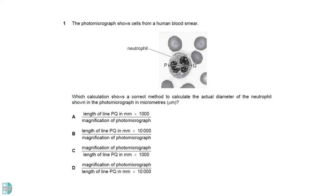To convert millimeter to micrometer, multiply the value by 1000. Actual size is calculated as image size over magnification. So the answer is A.